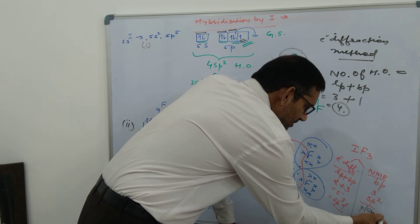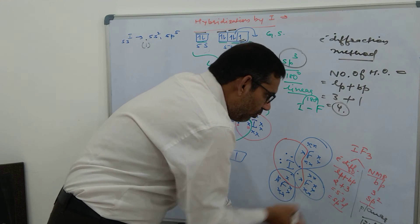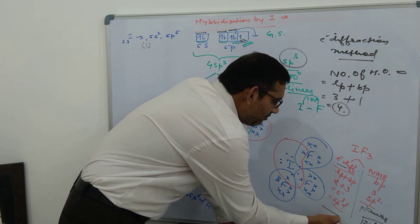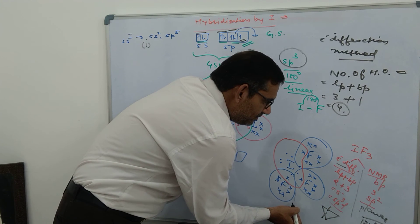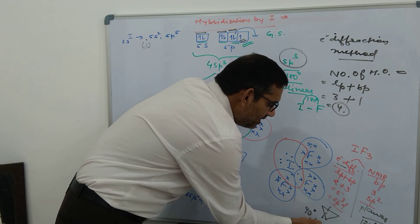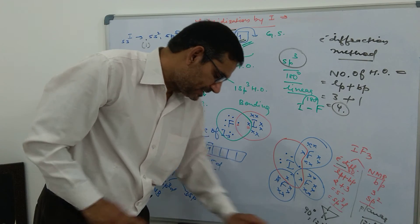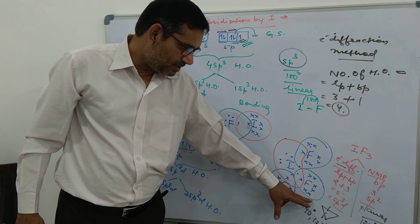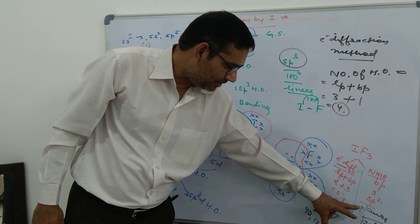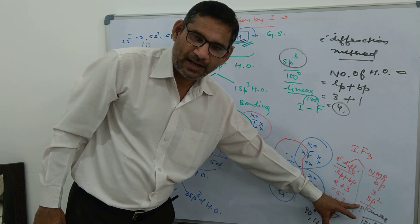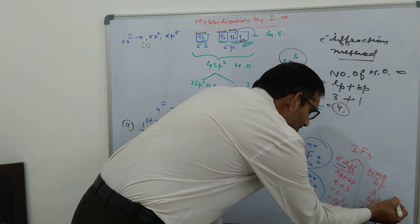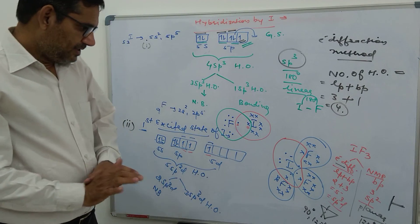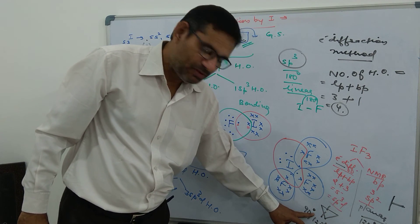Since hybridization in IF₃ according to NMR is sp², the shape would be planar and bond angle would be 120°. According to the electron diffraction method, since hybridization is sp³d, the shape will be trigonal bipyramidal, with bond angles of 90° and 120°. However, the actual shape is T-shaped (not planar), so the sp³d assignment from electron diffraction is more appropriate, giving bond angles of 120° and 90°.